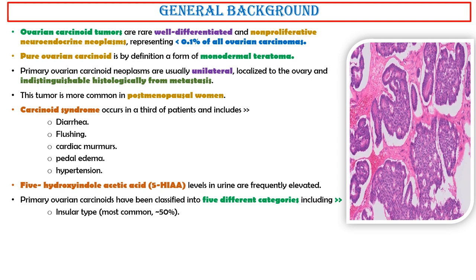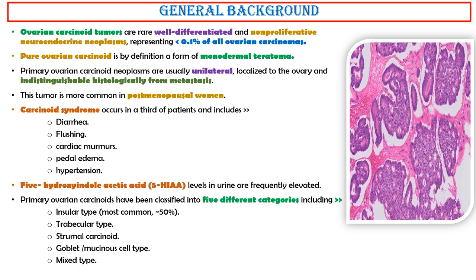Primary ovarian carcinoids have been classified into five different categories: Insular type, which is the most common type at approximately 50%; Trabecular type; Stromal carcinoid; Goblet mucinous cell type; and Mixed type.